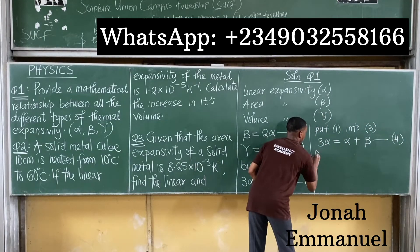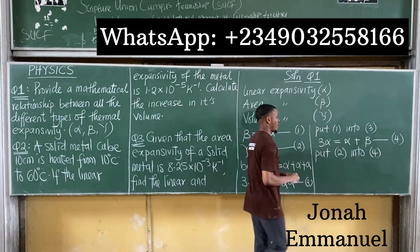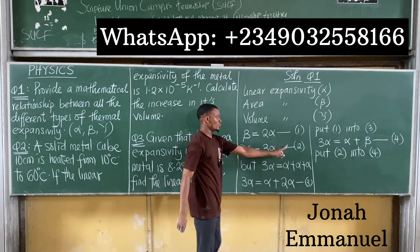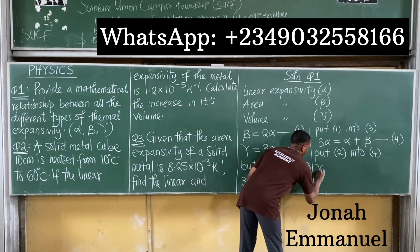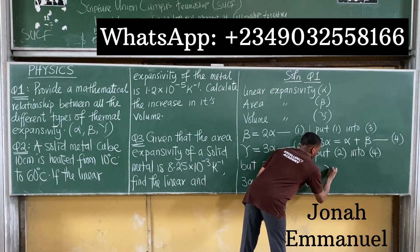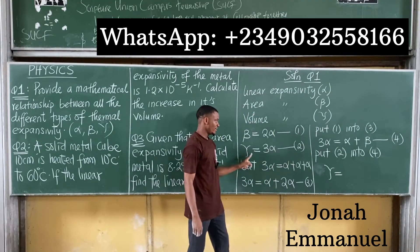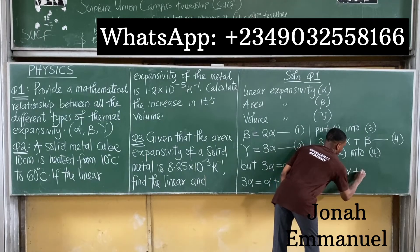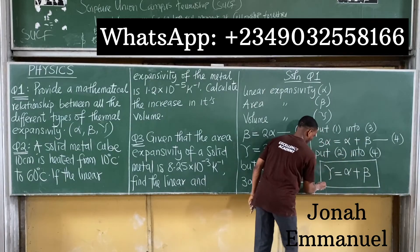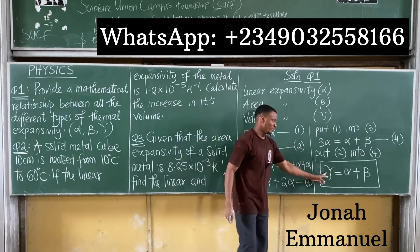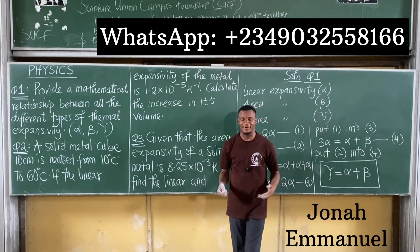Next, if we put equation two into equation four — from equation two we said three alpha is equal to gamma. So gamma is equal to alpha plus beta. This becomes the relationship that directly connects volume expansivity, linear expansivity, and area expansivity.